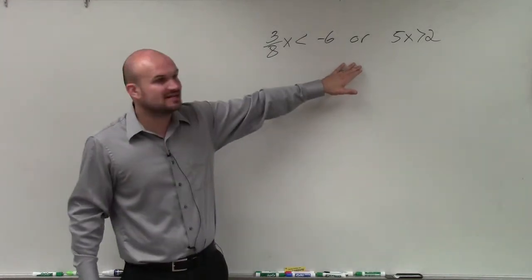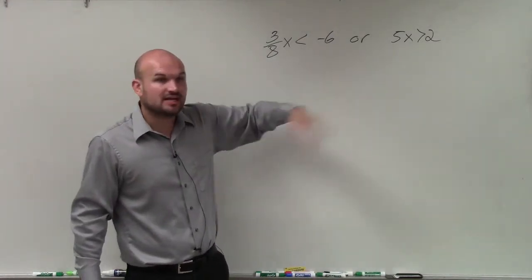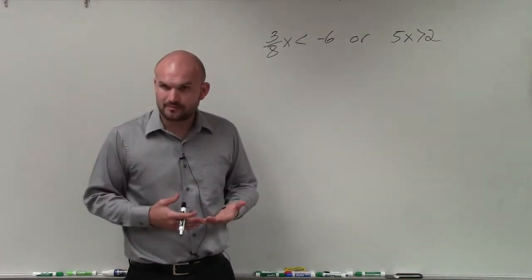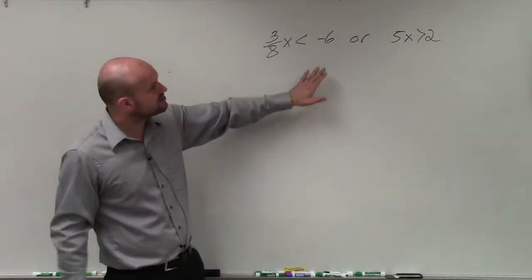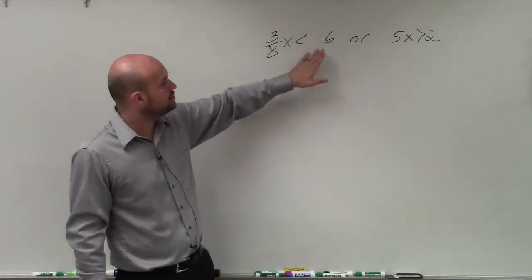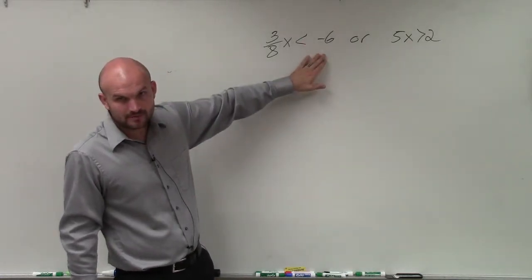Or is inclusive. It doesn't have to be true for both of them. It could be true for one or the other or for both of them. So for this one, when we have an or, just like when we broke the other one into an and, you solve it separately. All right?